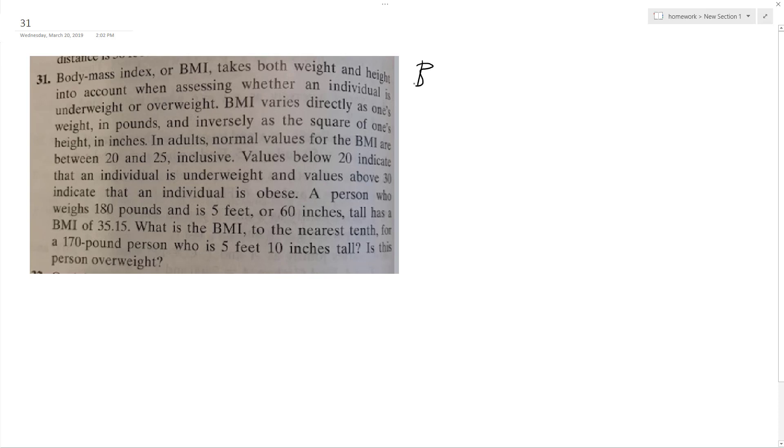So the standard equation we're using is BMI equals whatever their K constant is times W over H squared. So we do know that a person who has a BMI of 35.15, who has a weight of 180 pounds and they're 5 feet tall or 60 inches, so 60 squared. And if we solve for K in this instance, K is equal to 35.15 times 60 squared divided by 180, we end up with 703 as our constant K.